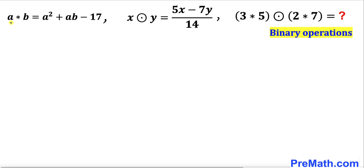Our first operation is a★b = a² + ab − 17, and our second operation is x⊙y = (5x − 7y) / 14. We are going to find the value of (3★5) ⊙ (2★7).